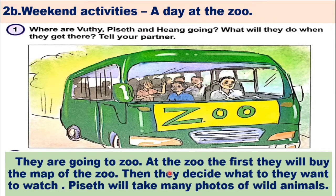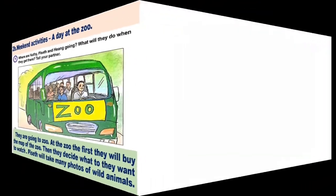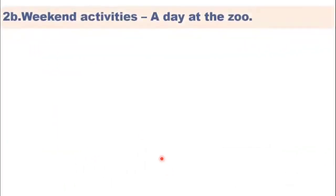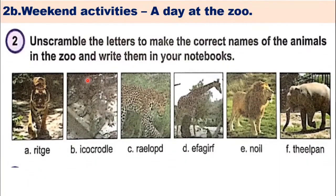Okay, let's go to another point. Number 2: Unscramble the letters to make the correct names of the animals in the zoo and write them in your notebooks. Number 2: Unscramble the letters to make the correct names of the animals in the zoo.